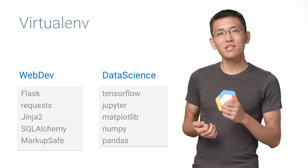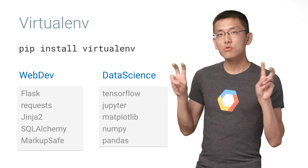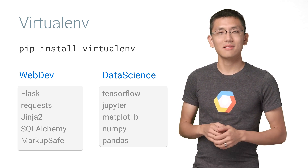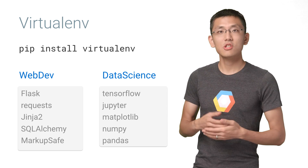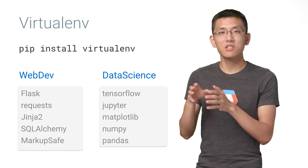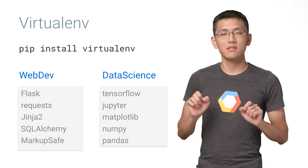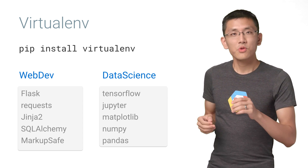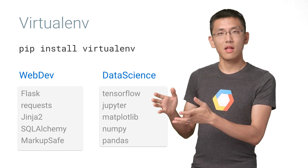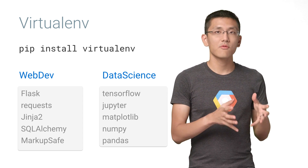Virtualenv is a package that allows you to create named virtual environments where you can install PIP packages in an isolated manner. This tool is great if you want to have detailed control over which packages you install for each environment you create. For example, you could create an environment for web development with one set of libraries and a different environment for data science.